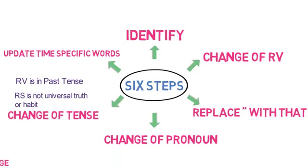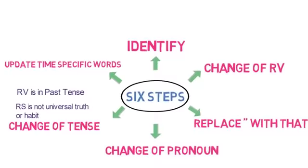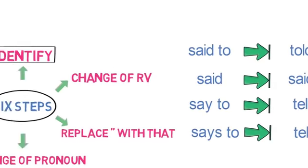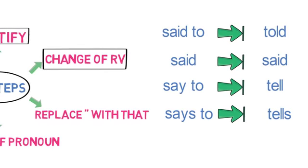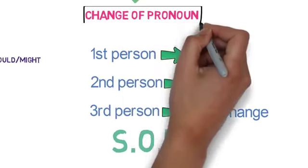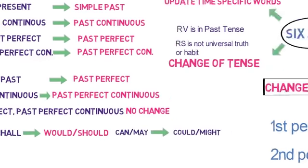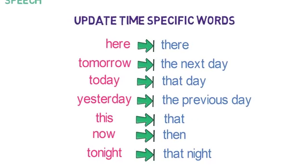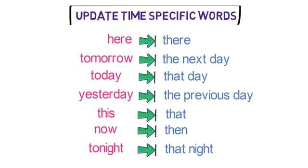This is the six-step formula to convert any direct speech to indirect speech for a statement. First, identify the subject, object, reporting verb, person and tense in the sentence. Second, change the reporting verb as per the workflow. Third, replace the inverted comma with 'that'. Fourth, change the pronoun as per the workflow. Fifth, change the tense as per the workflow. And sixth, change the time-related words in the reported speech as per the workflow.